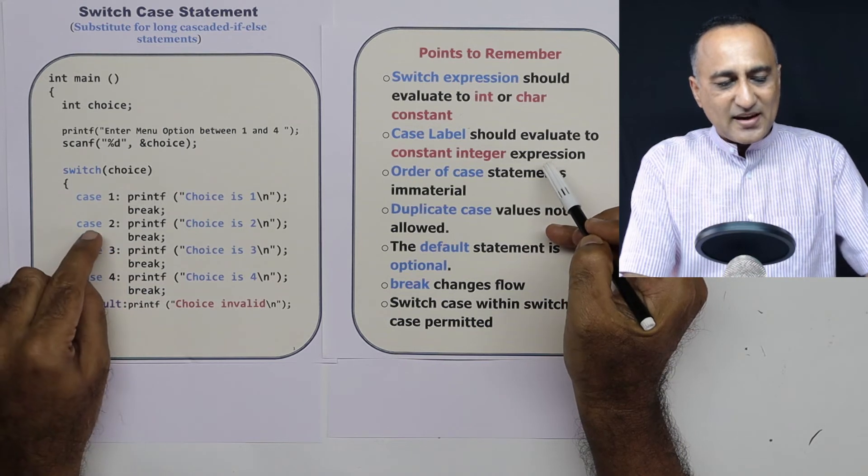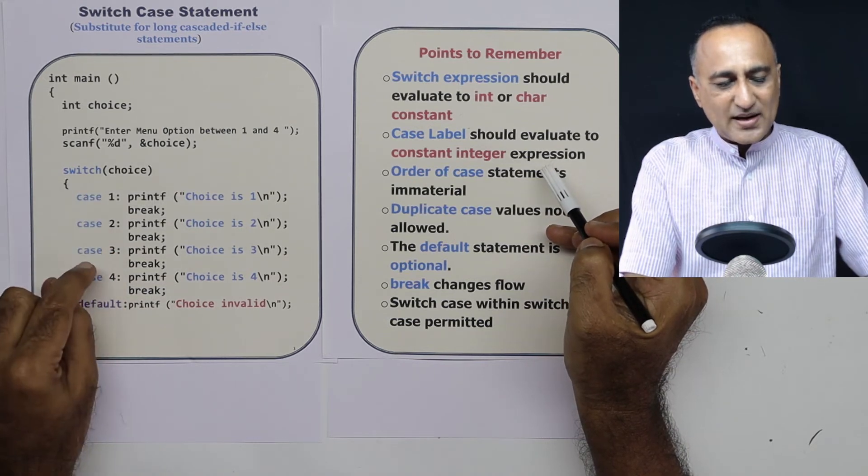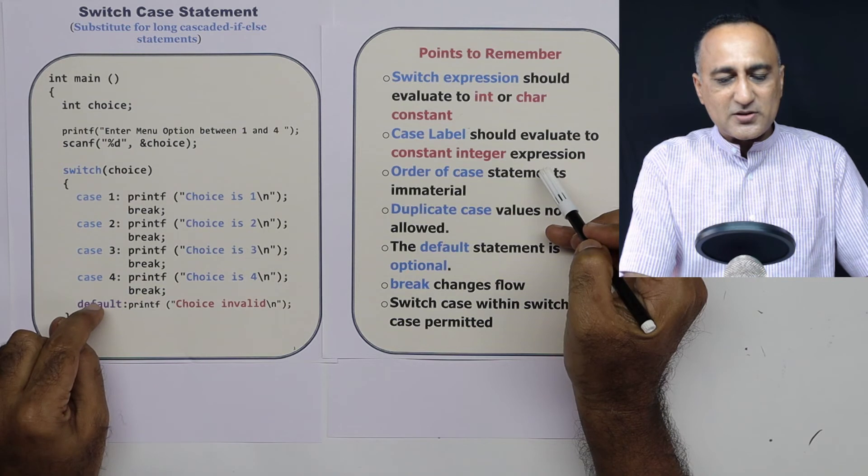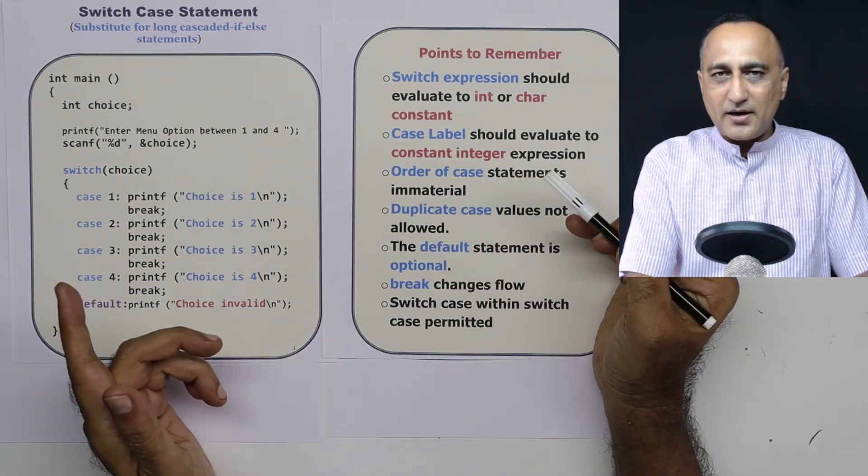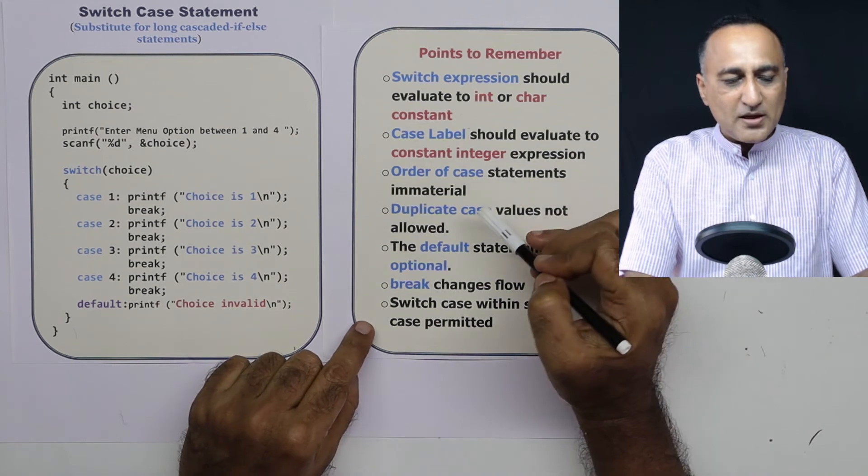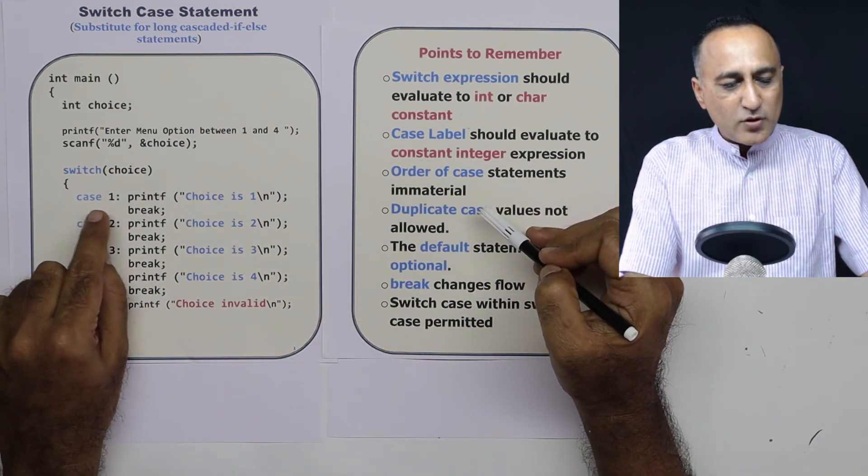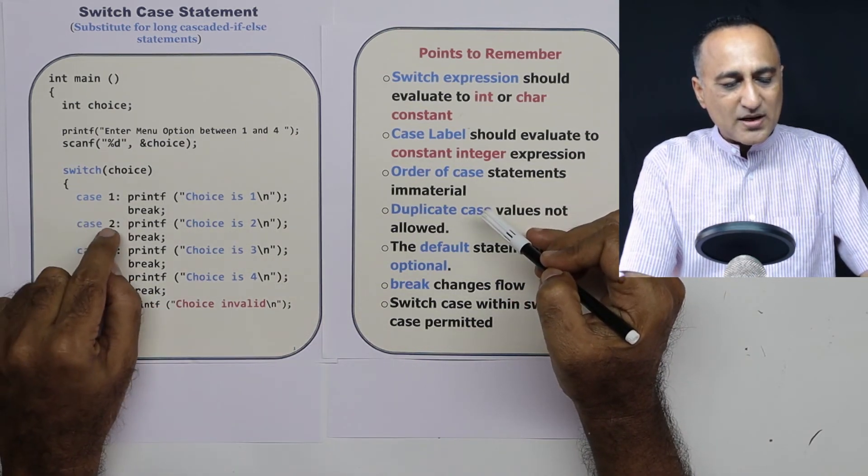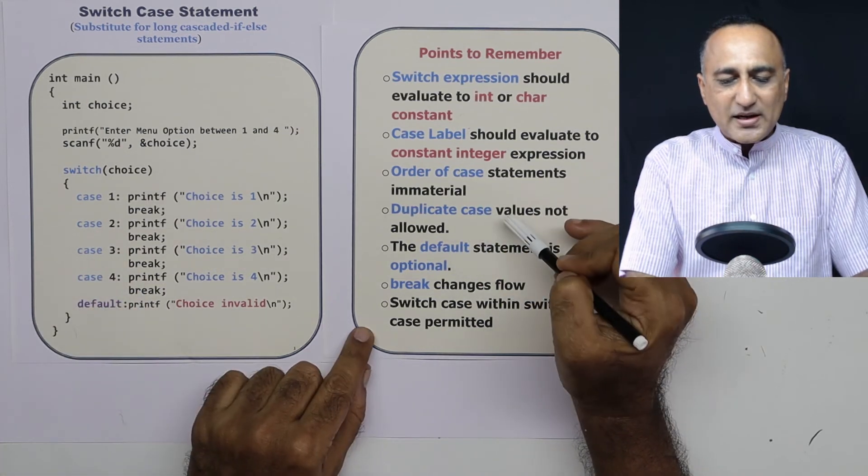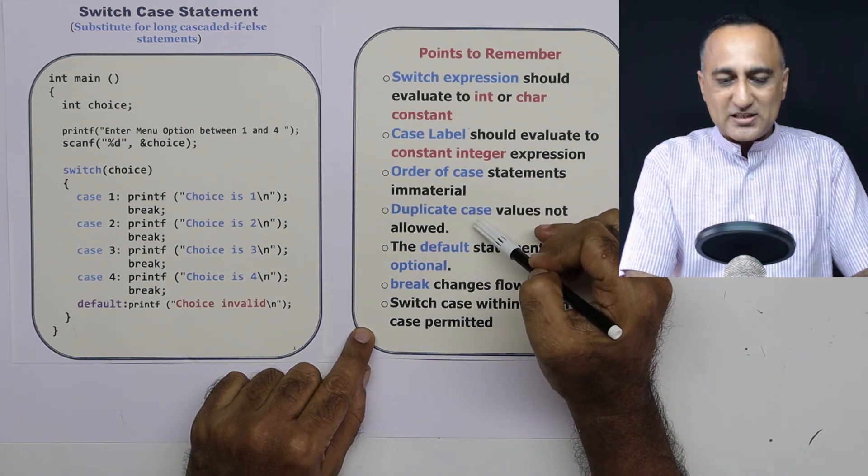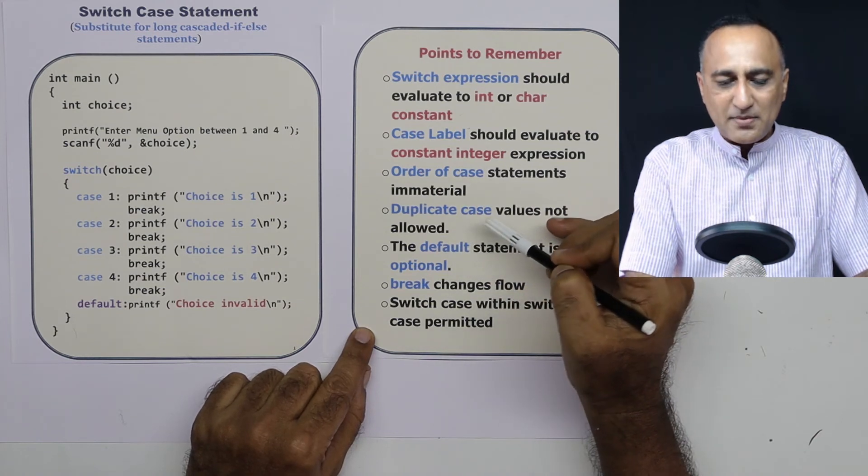Next thing, I can have case 2 before case 1, I can have case 3 after case 4. The order of the case statements is not relevant, it is immaterial. Important thing is you can have only one case 1, you cannot have case 1 again, and here again case 1, again case 2, case 2, like that. Duplicate case labels are not accepted, it will flag you a compile time error.